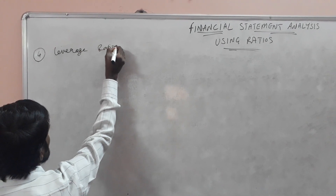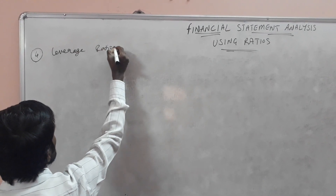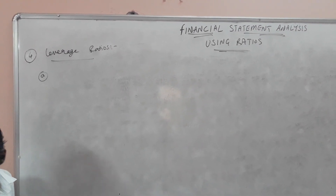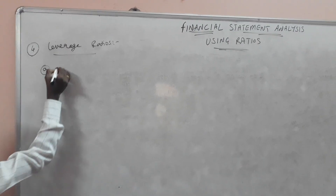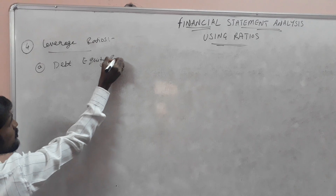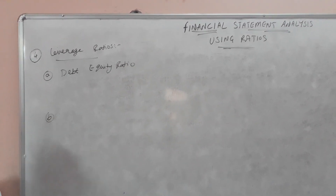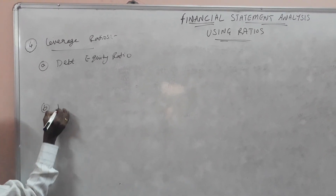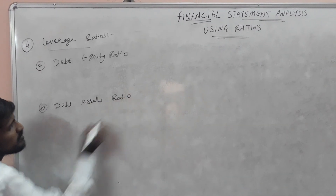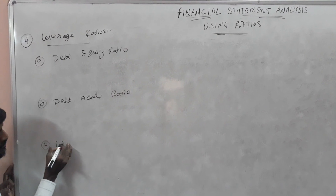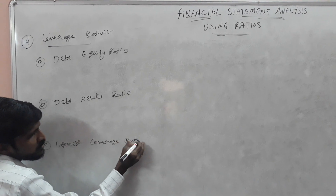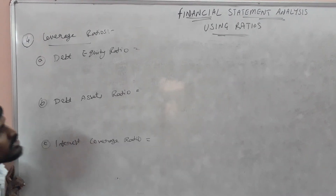Leverage ratios. Under that, first we will have the debt-equity ratio. Second one, debt-asset ratio, and the third one, interest coverage ratio. So let's learn what will be the formulas for these three ratios.